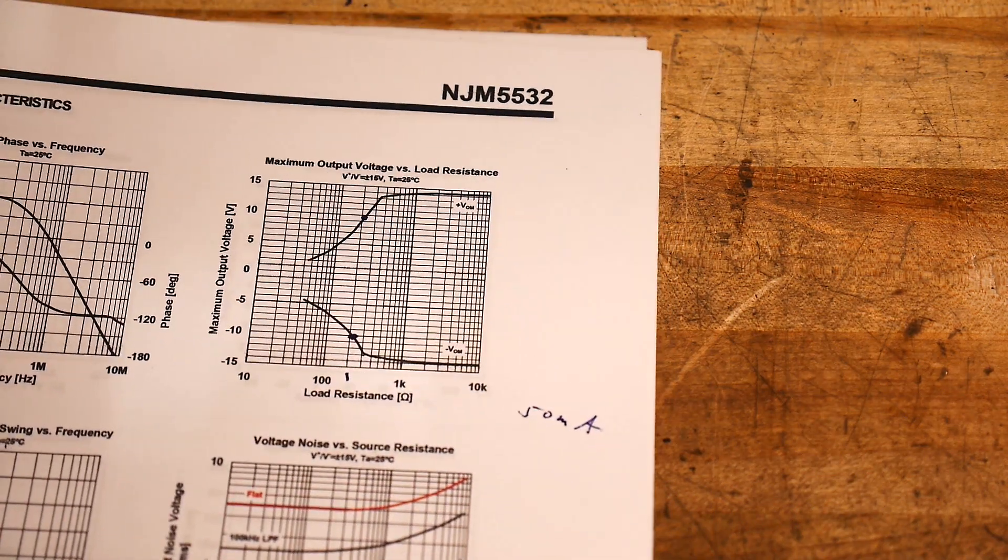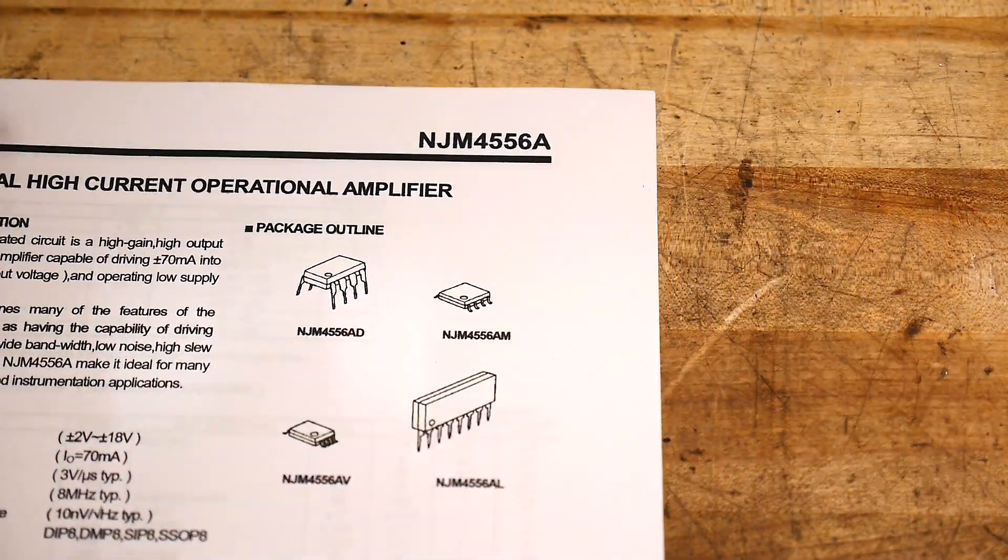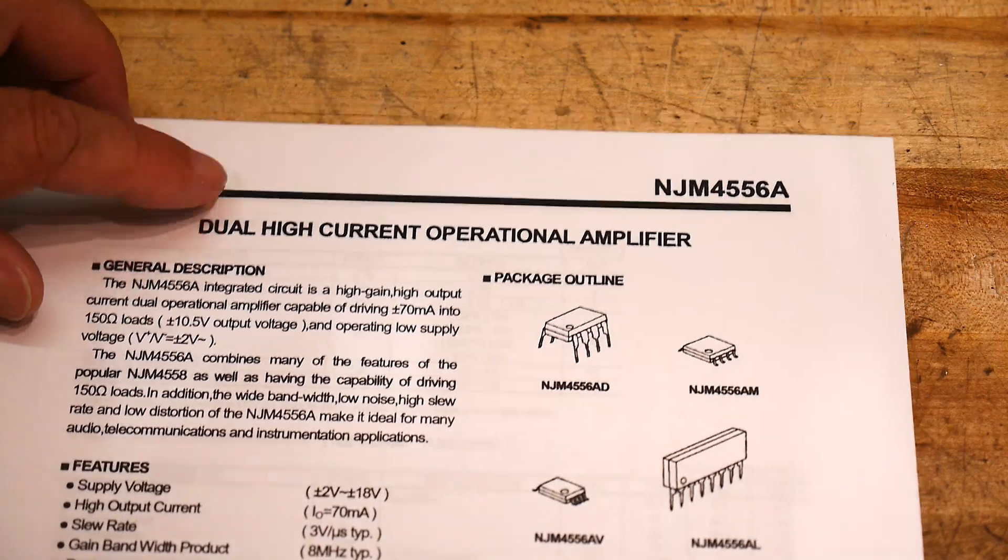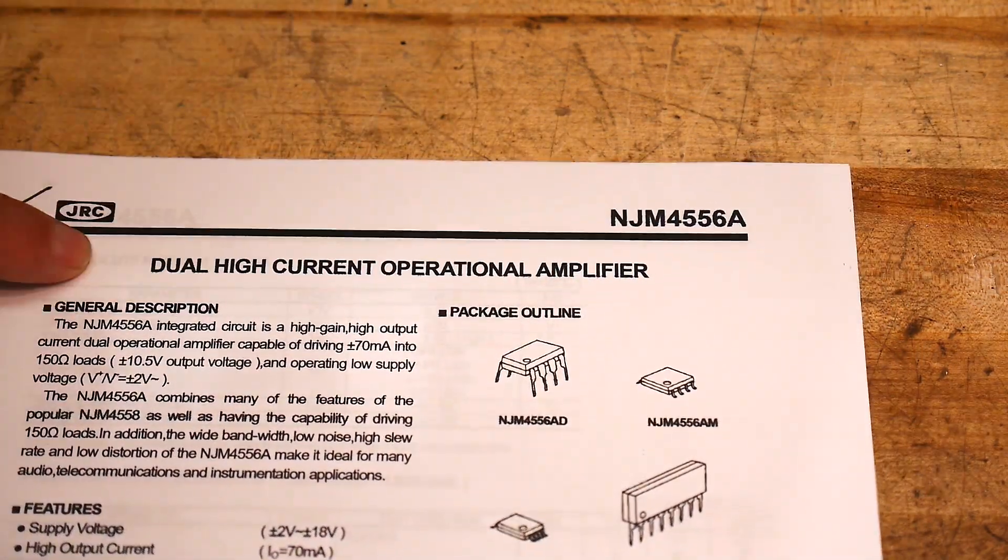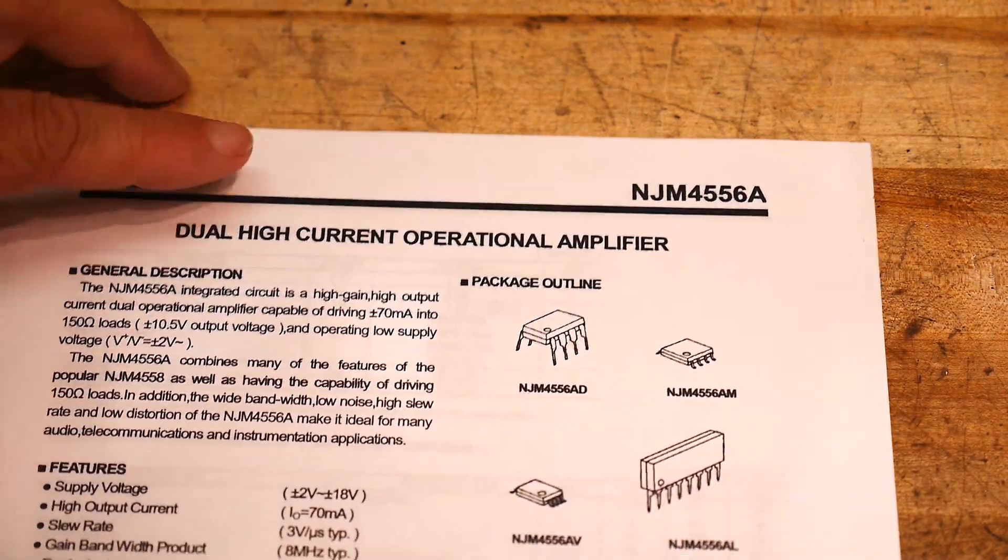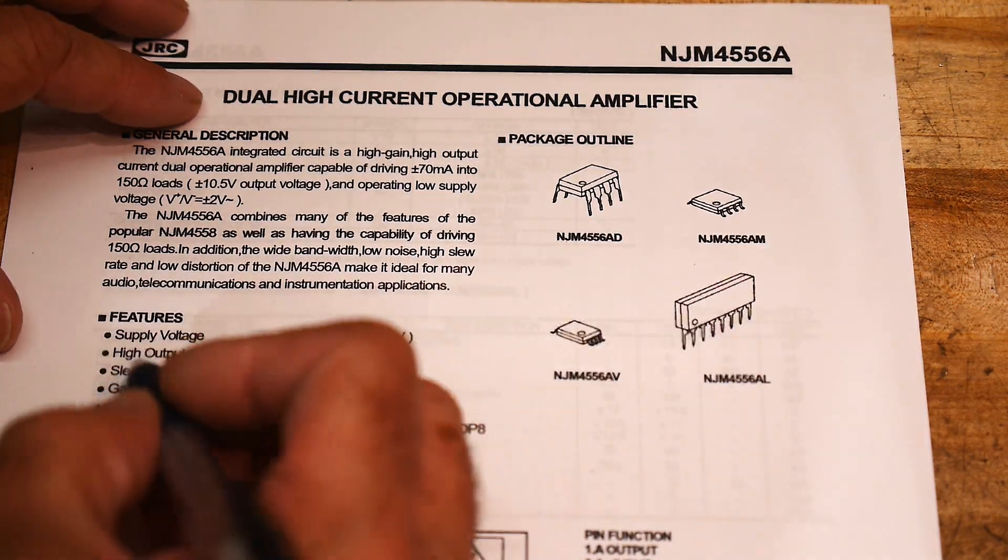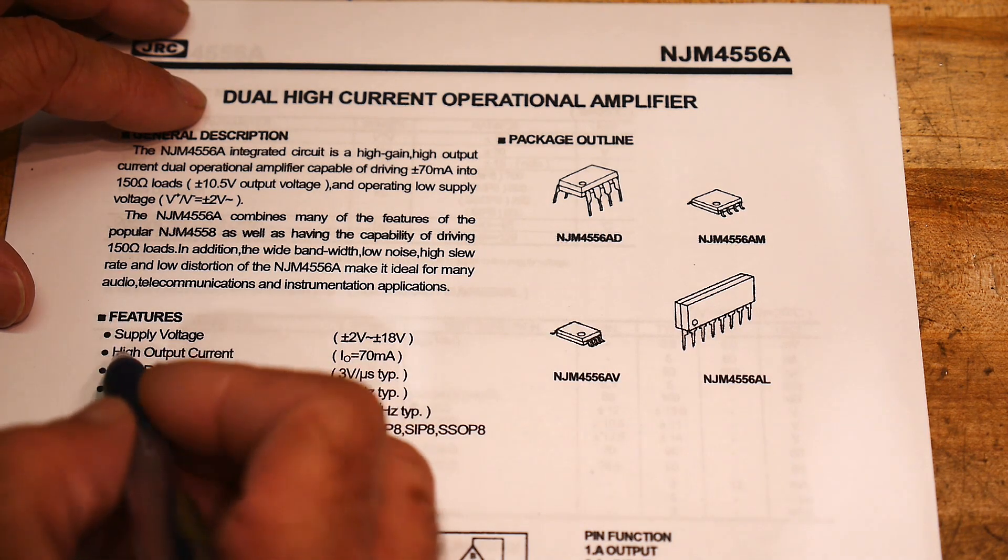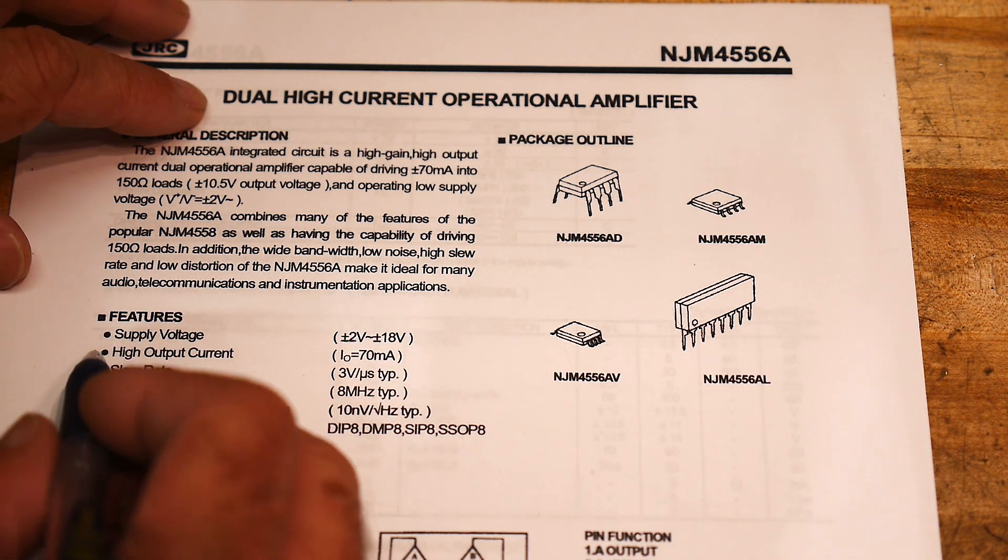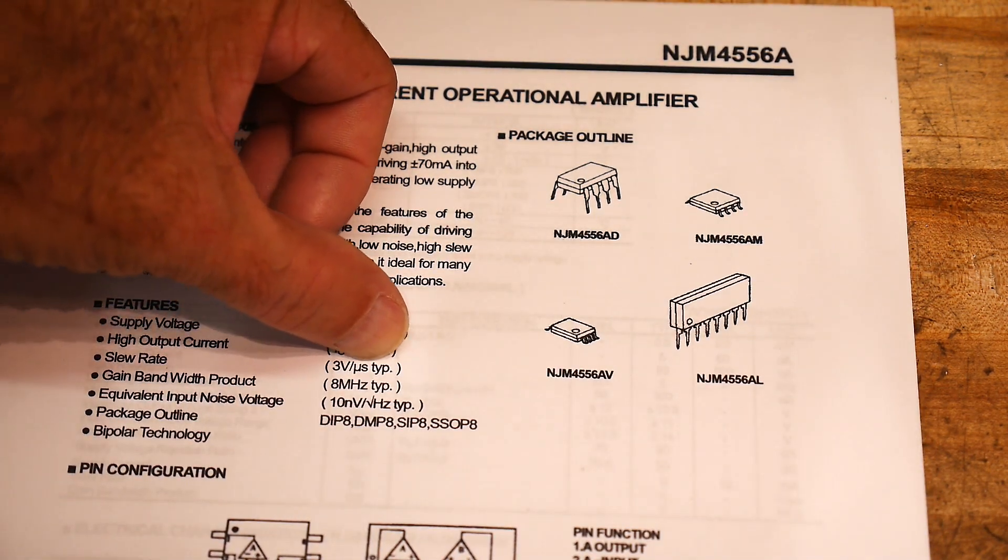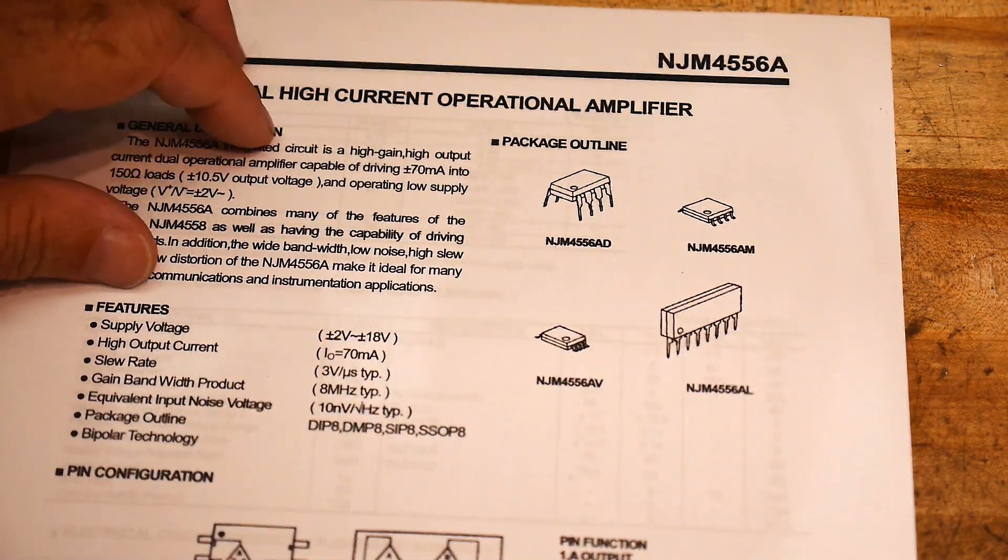So the device that I purchased is a NJM4556, and its claim to fame right here in the title is a high current op amp. So this one's high current. And it actually is in the specification. There actually is an output current specification, it's 70 milliamps. And it says right here features high supply voltage and high output current and high slew rate, so 3 volts per microsecond. So this should be able to grunt some things.